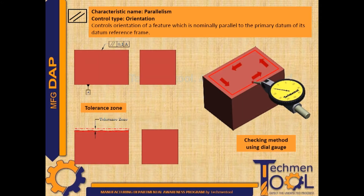In the given example, the tolerance zone of 0.1 of the rectangular feature will be measured with respect to datum A using a dial gauge, by moving its lever plunger on the surface of the feature which is placed on another respective surface as shown in the picture. The deflection of the dial gives the actual parallelism value with respect to datum A, and that value should be within the tolerance zone.